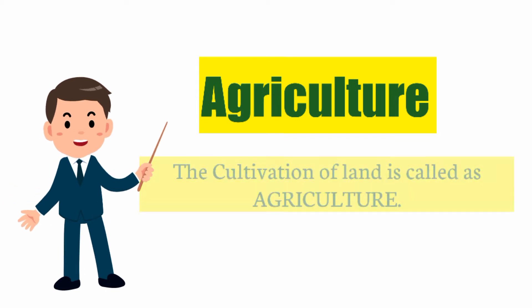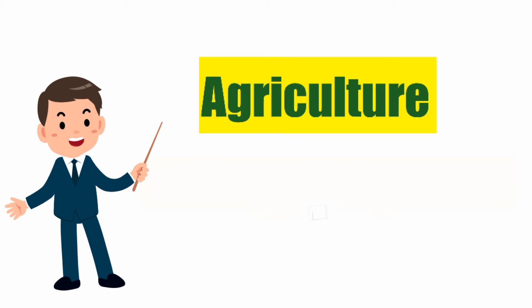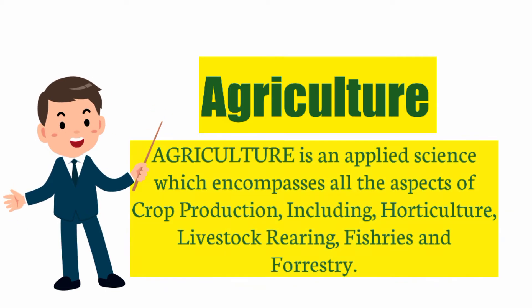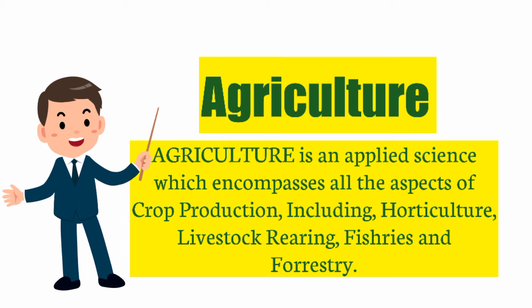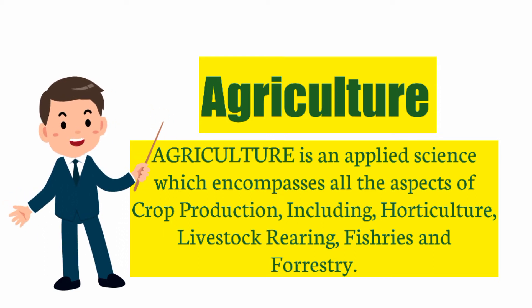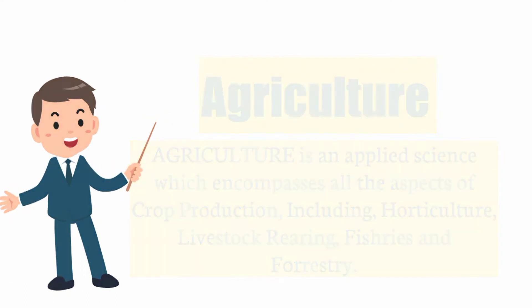So, following this terminology, agriculture means the cultivation of land. Or we can say agriculture is an applied science which encompasses all aspects of crop production, including horticulture, livestock, clearing, fisheries, and forestry.